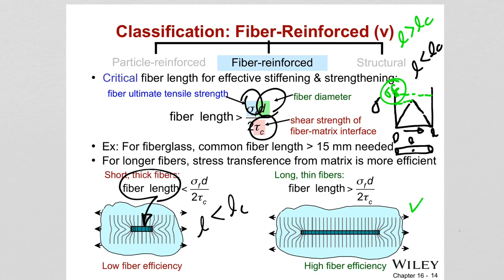In summary, there must be a critical fiber length for a given fiber system to efficiently achieve strengthening and stiffening. This critical fiber length also depends on the fiber strength, fiber diameter, and the shear yield strength of the interface between fiber and matrix.